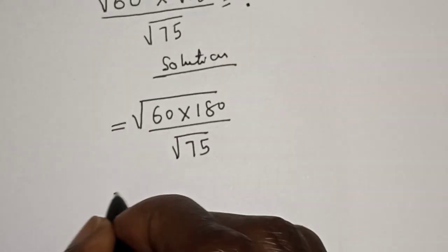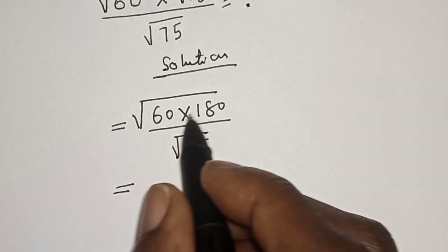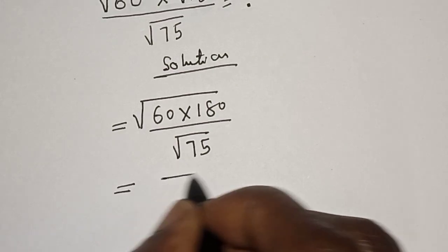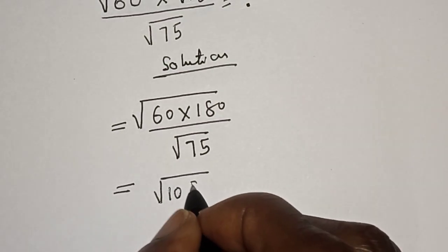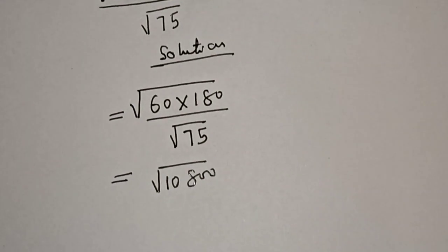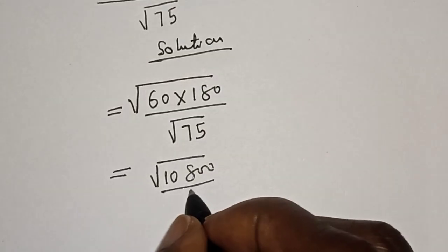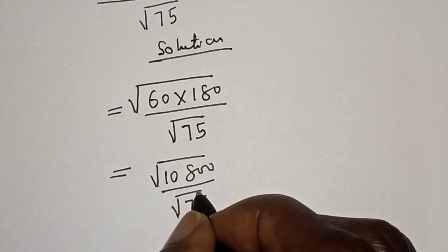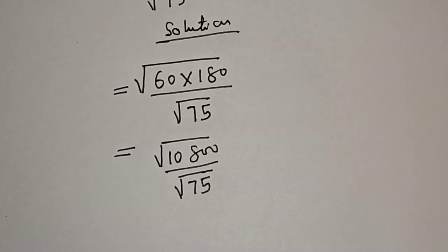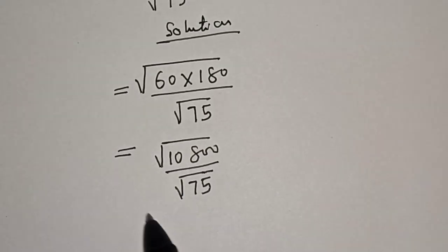Then this is equal to 60 multiplied by 180, that is square root of ten thousand eight hundred over square root of seventy five. Then we have the square root of, and we can combine this.